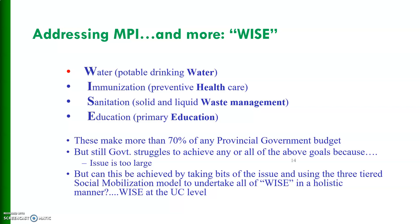There is another framework known as WISE. W stands for Water — portable drinking water. I stands for Immunization — preventative healthcare. S stands for Sanitation — solid and liquid waste management. E stands for Education — primary education. These components make up more than 70% of any provincial government budget, but government still struggles to achieve these goals. However, this can be achieved by using the three-tiered social mobilization model to undertake all of WISE in a holistic manner at the Union Council level.